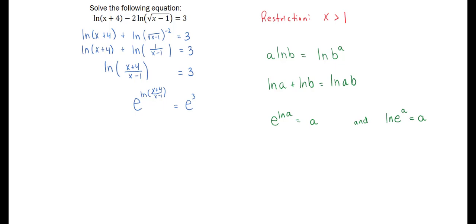We can now let both sides be exponents of the base e, and that left-hand side is going to simplify to be just x plus 4 over x minus 1 equaling e cubed.